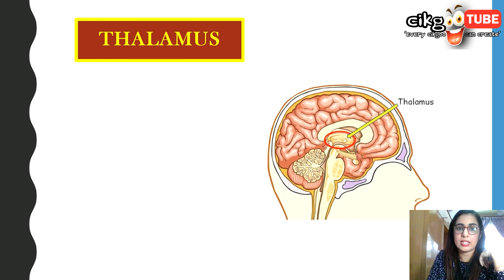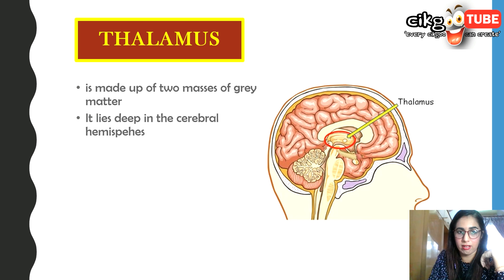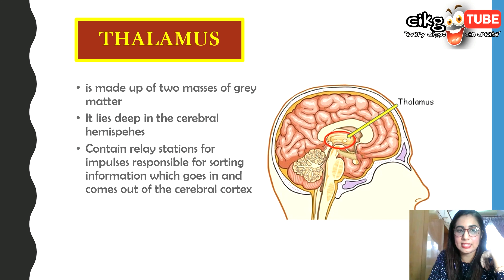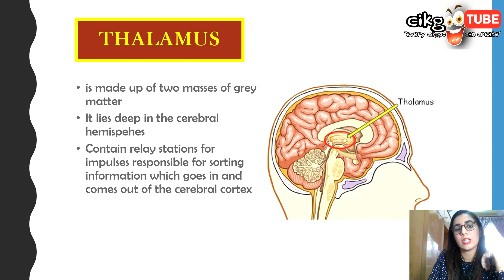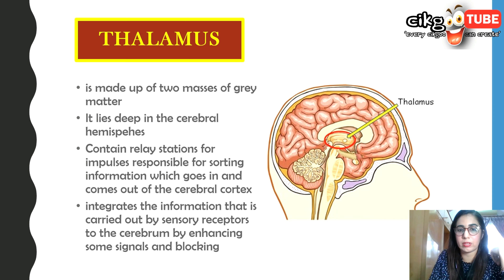The thalamus is made up of two masses of gray matter. It lies deep in the cerebral hemisphere and contains a relay station for impulses responsible for sorting information going in and out of the cerebral cortex. It also integrates information carried by the sensory receptors to the cerebrum by enhancing some signals and blocking others.